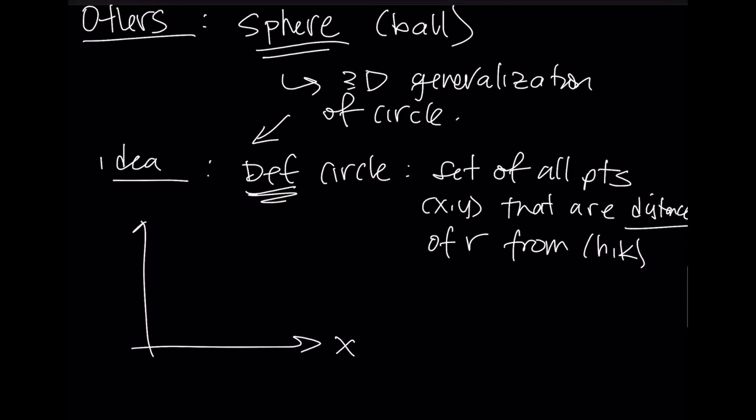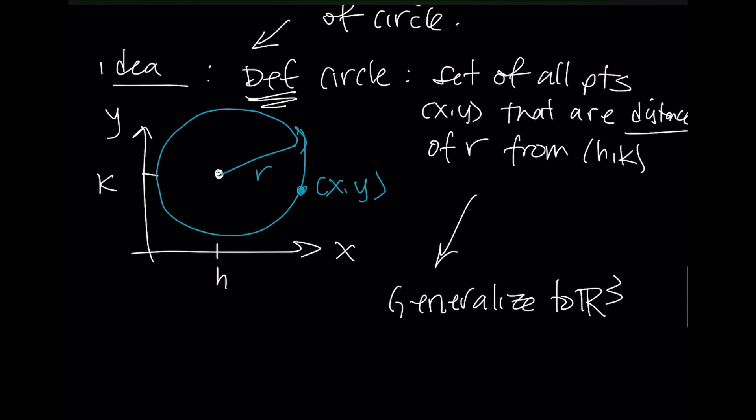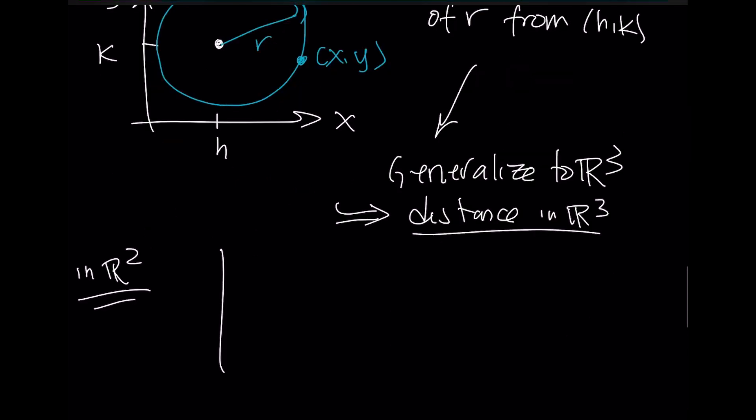And in two coordinates like this, you pick a center, h and k. I want it to be equally spaced like this. You pick any point on the circle, it's an x and a y. So in order to generalize to R3, we need to talk about distance in R3. In R2, distances are very simple because they come from right-angle triangles. If I give you a point x1, y1, and I give you some other point x2, y2, the Pythagorean theorem allows you to connect all of these things.